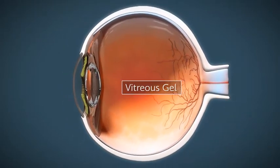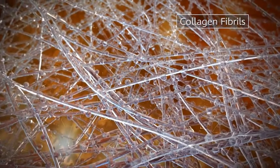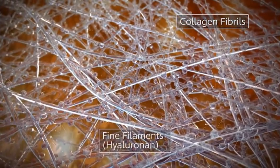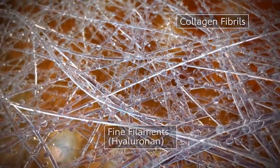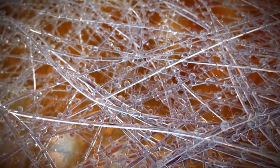The vitreous gel is one such structure. It contains a collagen fibrillar layer and glycosaminoglycans, primarily made of hyaluronic and, to a lesser extent, chondroitin sulfate.